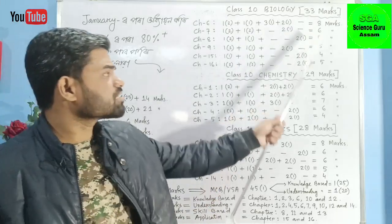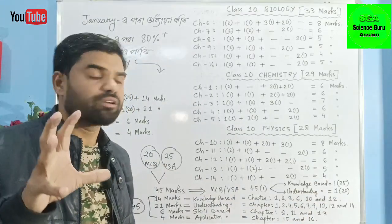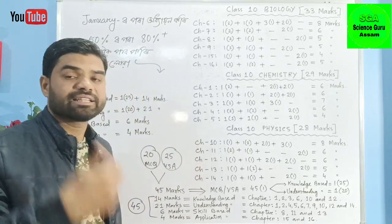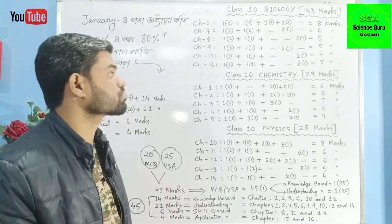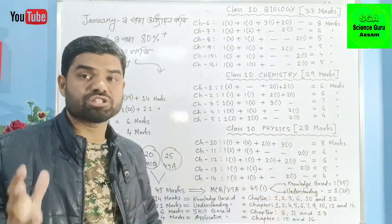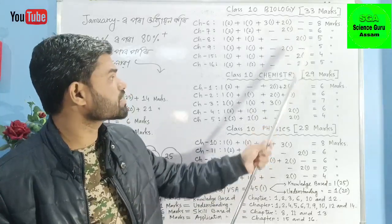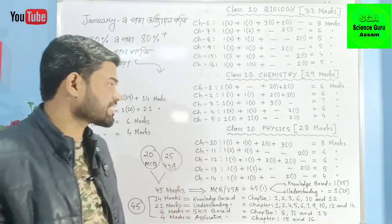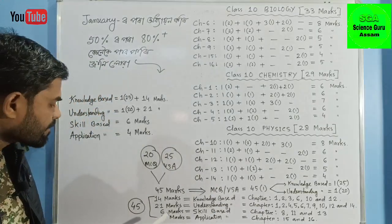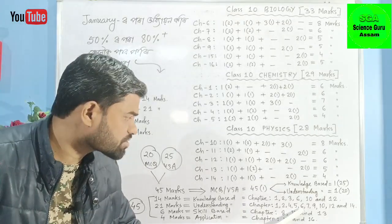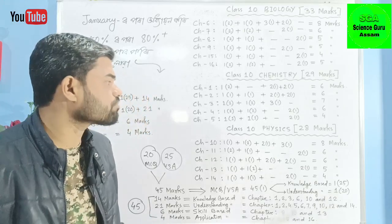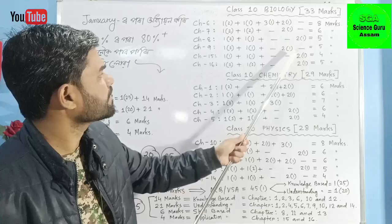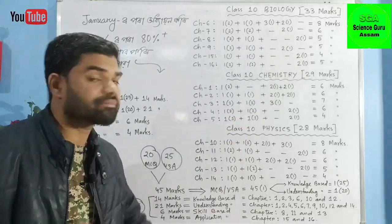Biology has 33 marks total. Biology is very easy - maximum marks come from specific chapters. Download our app for Biology. All types of questions - MCQ, VSA, knowledge-based, understanding-based, application-based, and skill-based are covered. For understanding-based questions, chapters 6, 7, 9, 10, and 12 are important in Biology.